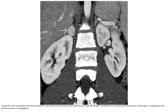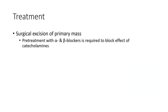Pre-medication is not required when using ionic contrast to image patients with pheochromocytoma or paraganglioma. Treatment: surgical resection of the primary mass. Pre-treatment with alpha and beta-blockers is required to block the effect of catecholamines.